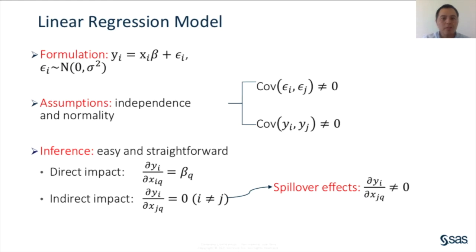Let's start with the classical linear regression model. In a multiple linear regression model, we assume a linear relationship between the dependent variable y and some independent variables. This linear relationship can be described by the equation y_i equals x_i beta plus epsilon_i, where beta is the vector of regression coefficients. The random error terms epsilon_i are assumed to be uncorrelated and have mean zero and constant variance sigma squared. Another two key assumptions are independence and normality. The normality assumption is only needed for inference. The regression coefficient beta_q measures the direct impact of an explanatory variable x_q on the dependent variable y, and an explanatory variable x_q does not have an indirect impact on y.